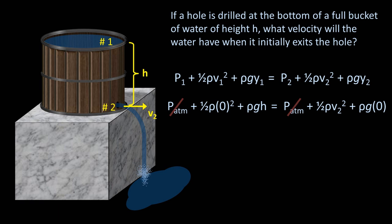So p atmosphere cancels out, and this term is zero, as is this one. This gives us density times little g times h equals one-half density times v2 squared. Densities cancel, and solving for v2, we find that it is equal to the square root of 2 times little g times h.